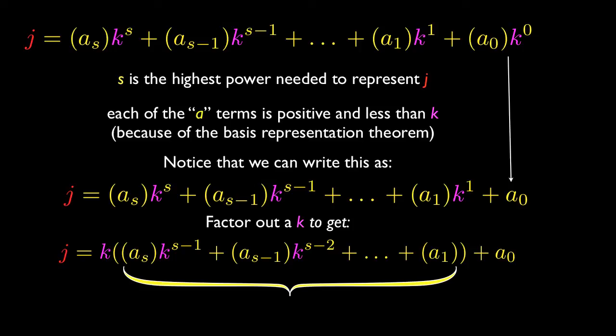And we can represent the entire thing in that big bracket below as one number because it's one big integer, and we can call it q. So j is equal to kq plus A sub 0, and it doesn't take that much to see that this is basically in the form we need. That A sub 0 is r, and that big thing in parentheses that I bracketed off is q.